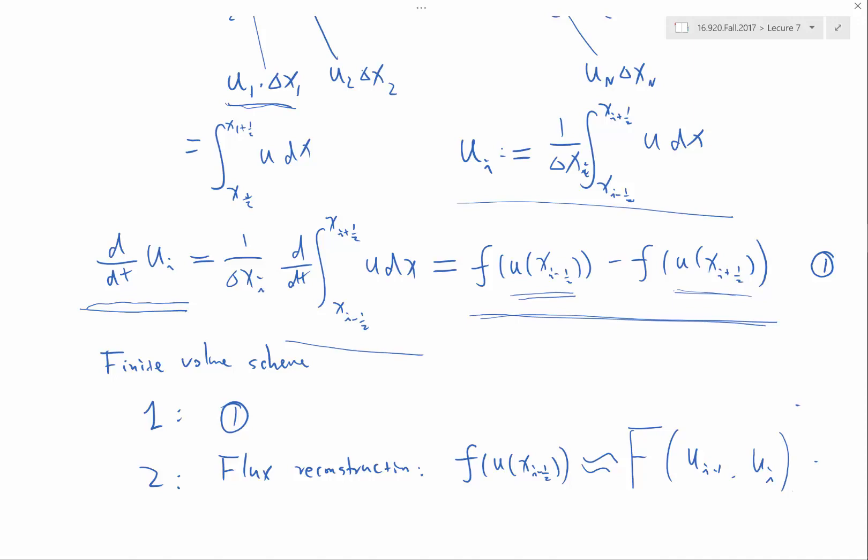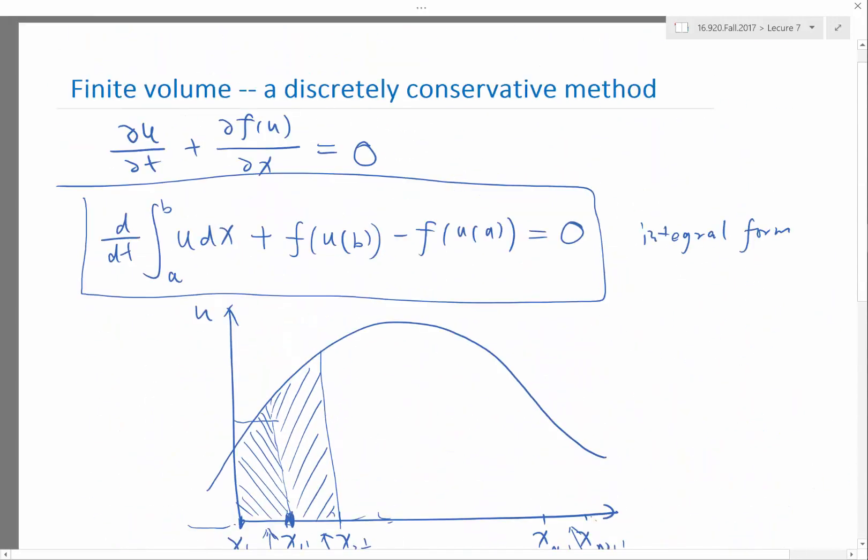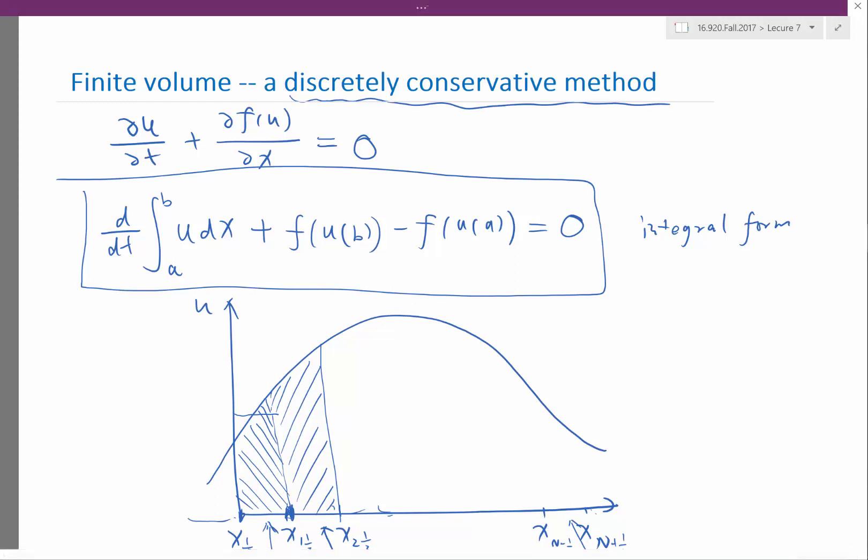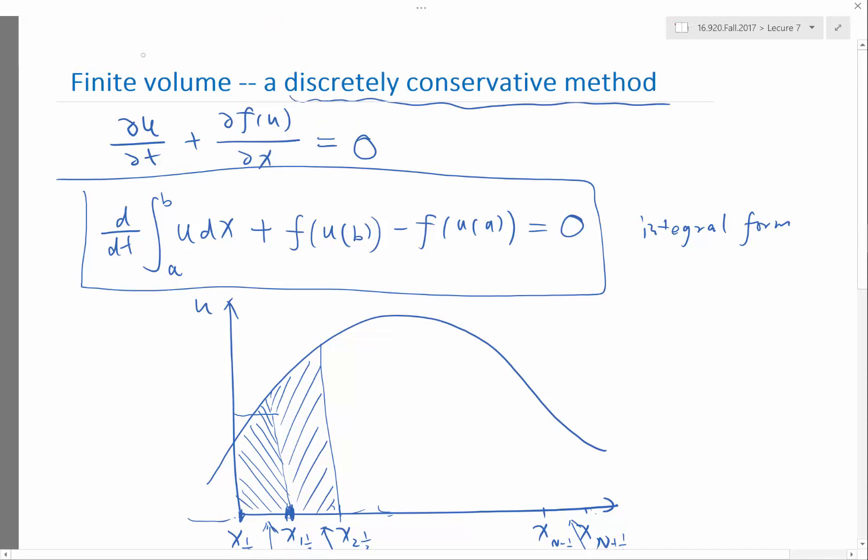A finite volume scheme is discretely conservative. That's another nice property that motivates why people use finite volume schemes, even in cases where you don't expect a shockwave, when discrete conservation and the conservation property matters very much.